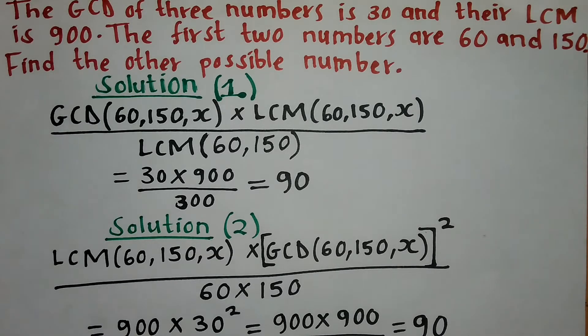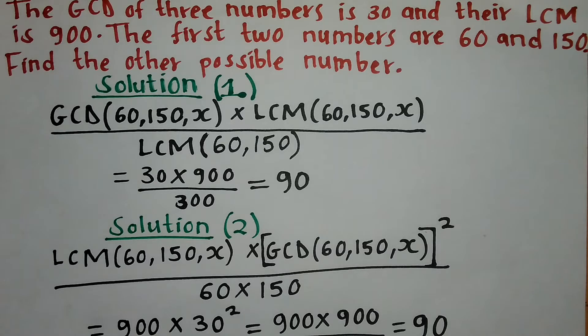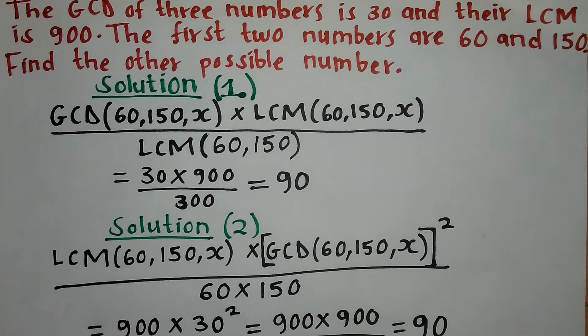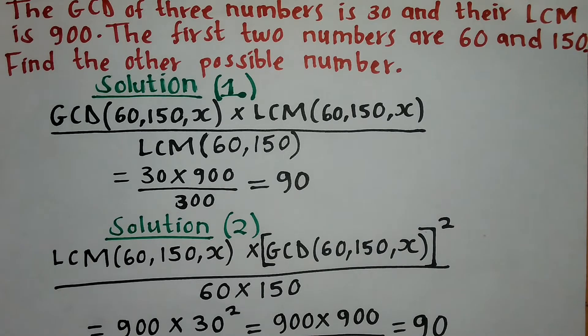Hello and welcome. Let's look at this commonly asked question about the GCD and LCM of three numbers. In this case, the GCD of three numbers is 30 and the LCM is 900. The first two numbers are 60 and 150.